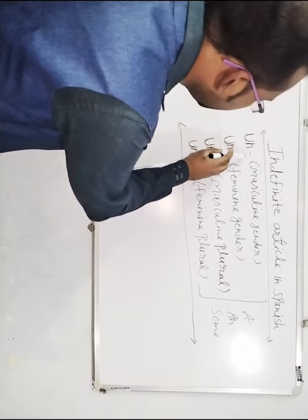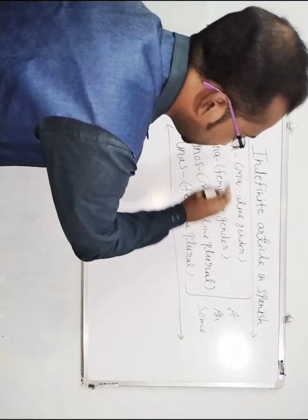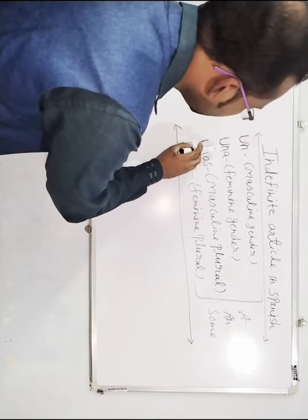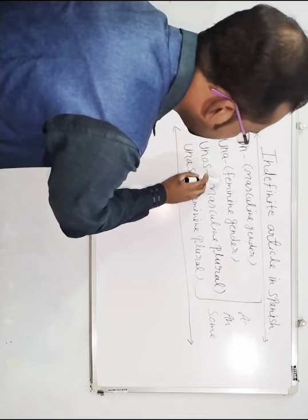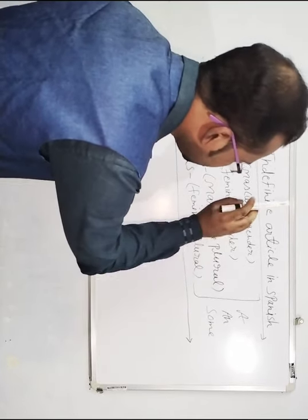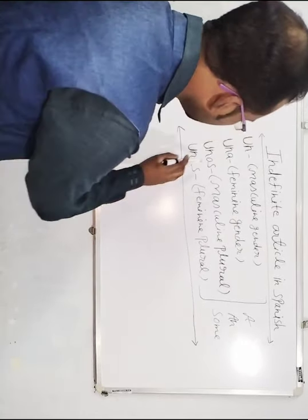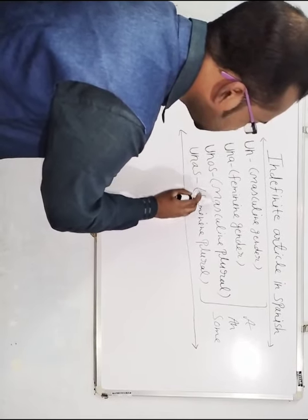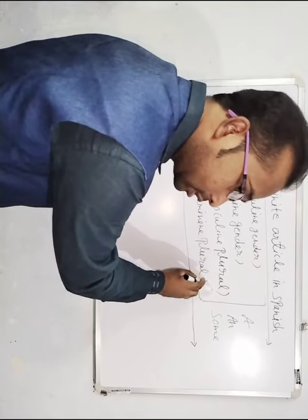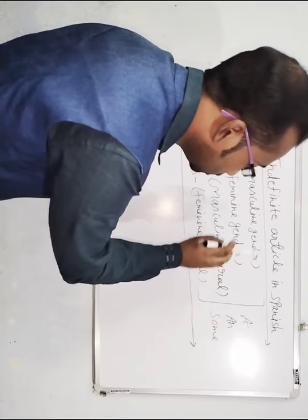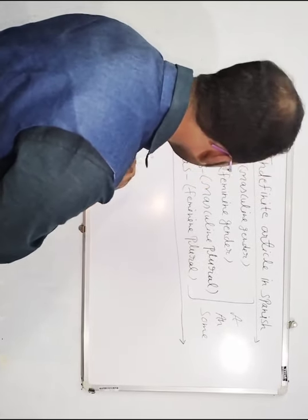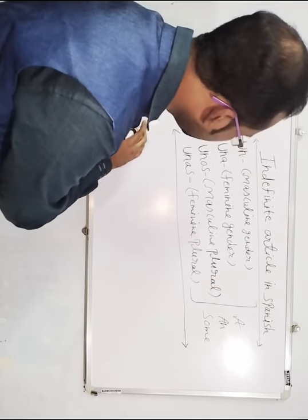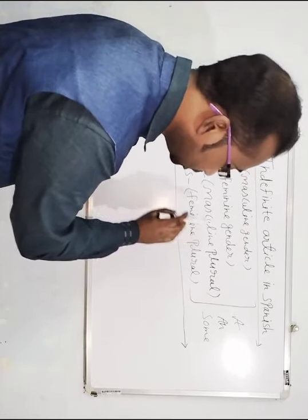Un will be used with masculine gender. Una will be used with feminine gender. Unos will be used with masculine plural — not singular. And Unas will be used with feminine plural.